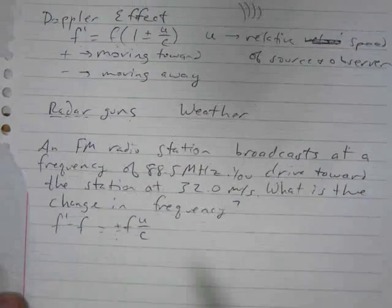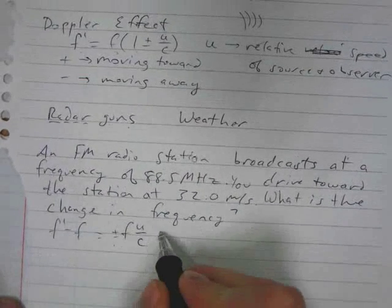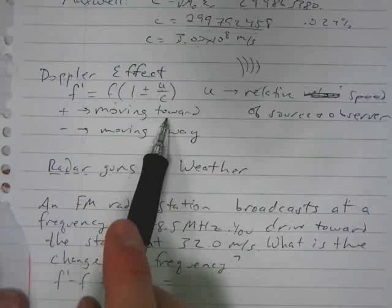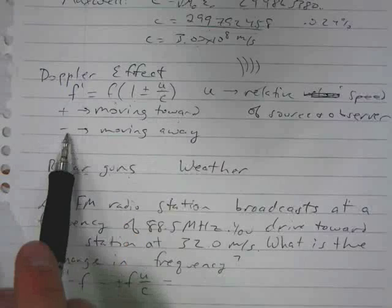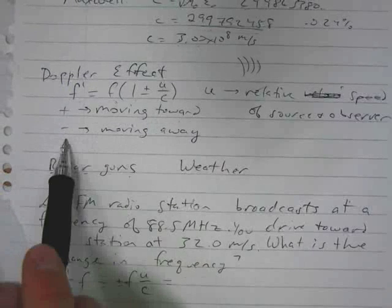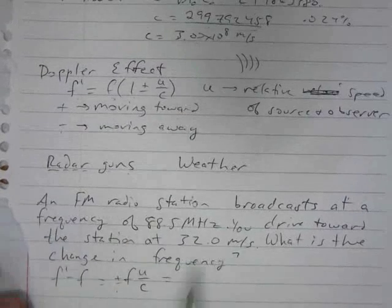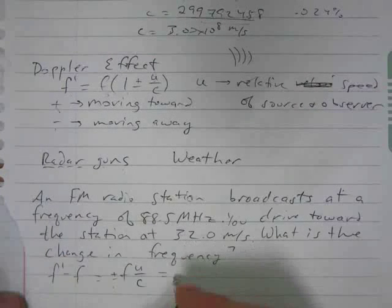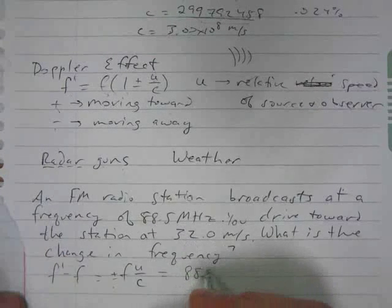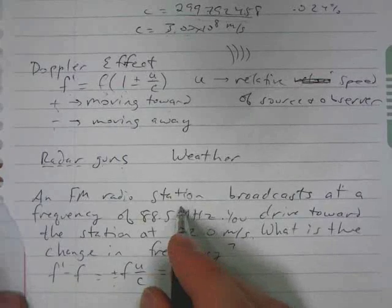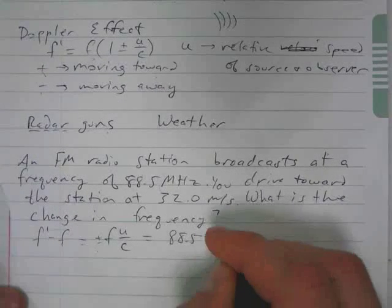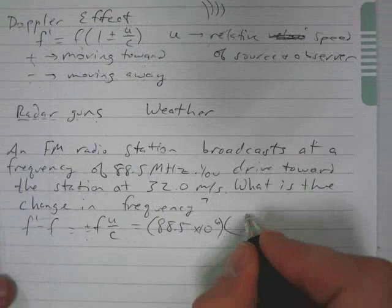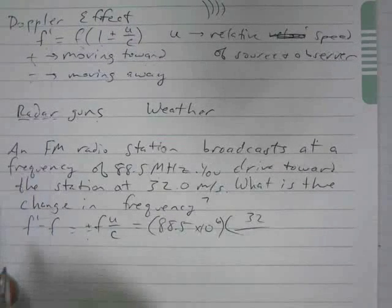We can start plugging stuff in. The plus corresponds to the source and observer moving toward one another or relatively moving closer, and minus corresponds to moving away. We're driving toward the station, so that's positive. It's positive 88.5 megahertz. Mega is times 10 to the sixth. Their relative velocity is 32 meters per second, and c is the speed of light, three times 10 to the eighth.